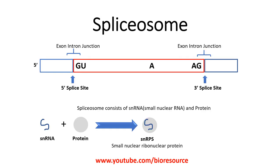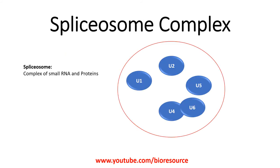The spliceosome is a complex of proteins and small nuclear RNAs. These complexes are involved in the splicing of RNA. The small nuclear RNA and proteins combine to form small nuclear ribonucleoproteins, or snRNPs, which are responsible for the splicing activity. The spliceosome complex consists of U1, U2, U4, U5, and U6 snRNPs, where U4 and U6 are always paired together.